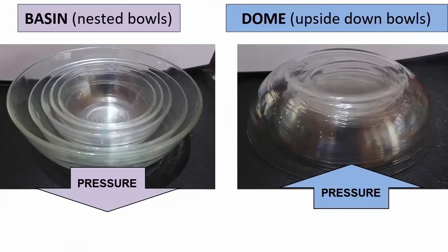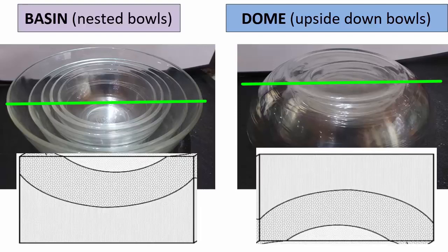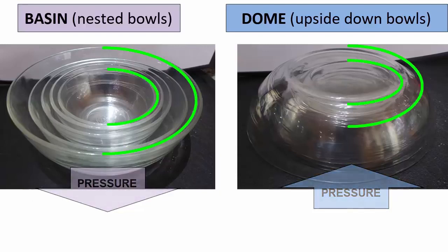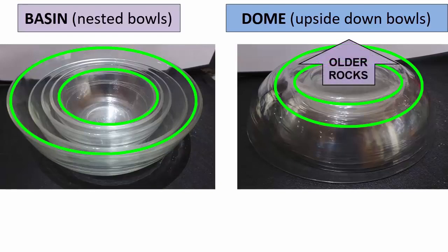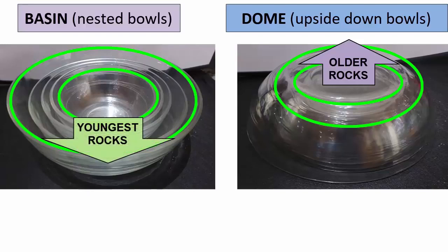Domes and basins are folds caused by pressure underground pushing up — a dome — or above ground pushing down — a basin — in a single spot like a point. These folds have no hinge axes. Take a cross-section anywhere through the center and a basin will look like a syncline and a dome like an anticline, no matter where you cut it. However, in map view after erosion, the outcrop pattern for both are concentric circles. Like anticlines, in domes the oldest rocks are pushed up in the center, while in basins, like synclines, the youngest rocks are preserved at the center.